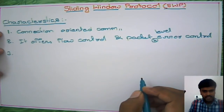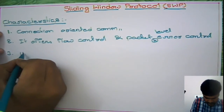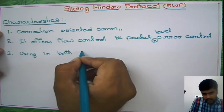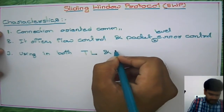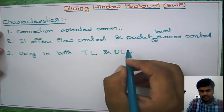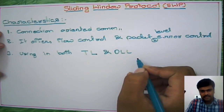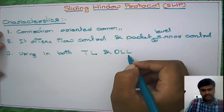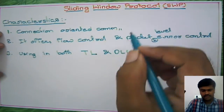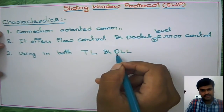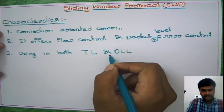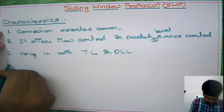The third characteristic is that SWP is used in both the transport layer and the data link layer. In the transport layer, flow control is a responsibility, and the same applies to the data link layer. So wherever flow control is needed, we use SWP — that is why these two layers both use the sliding window protocol.